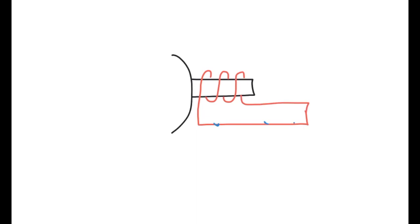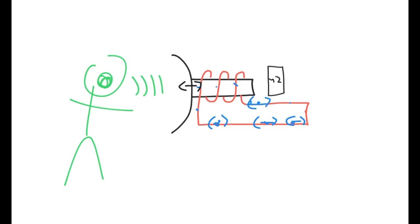Of course, I can imagine running this backwards. I can talk into the cone. My voice could vibrate the cone, shaking the solenoid. Moving the solenoid near the magnet will cause a current to be set up in the solenoid. This turns my voice into an alternating current. It's a microphone.